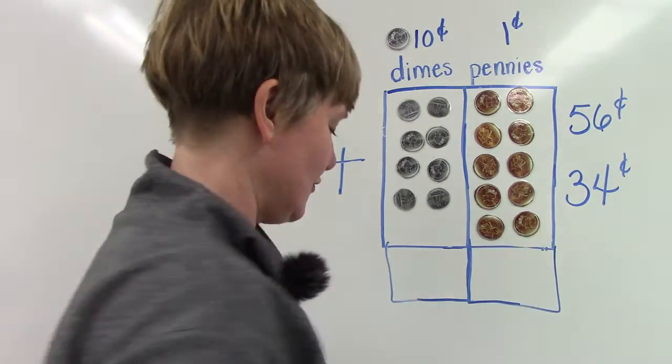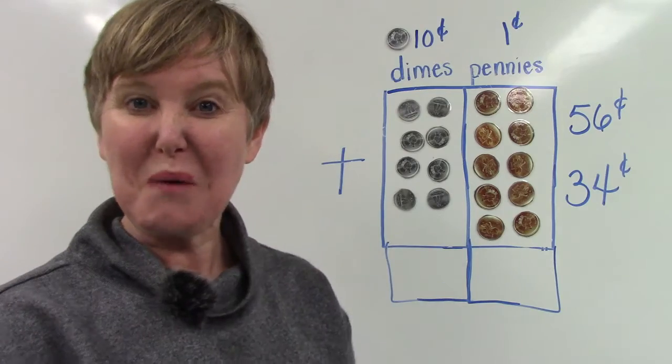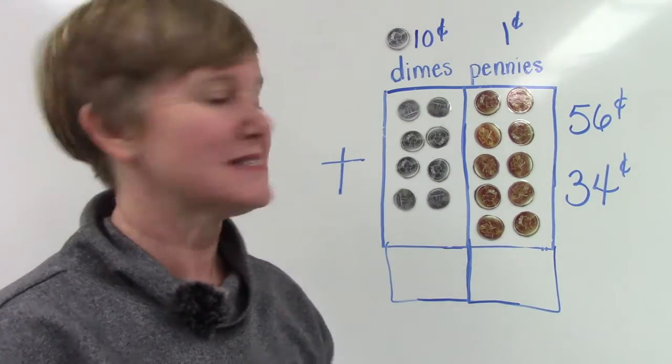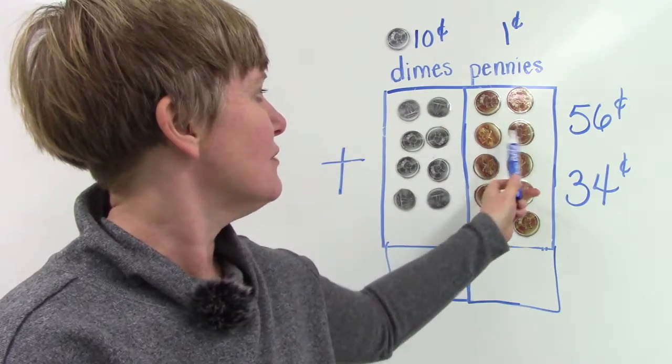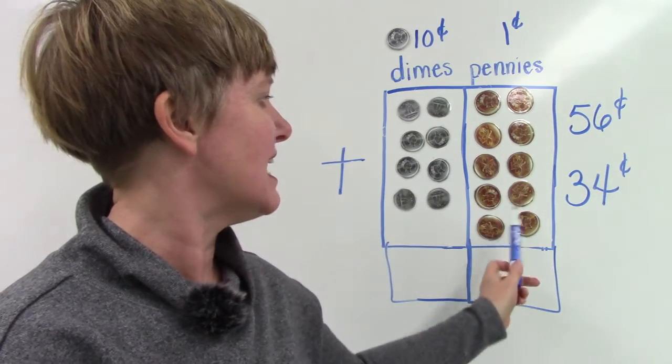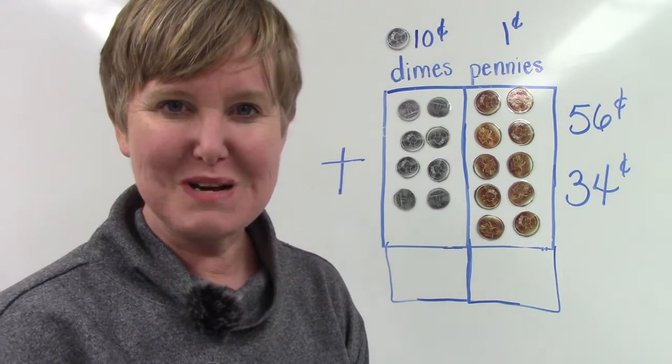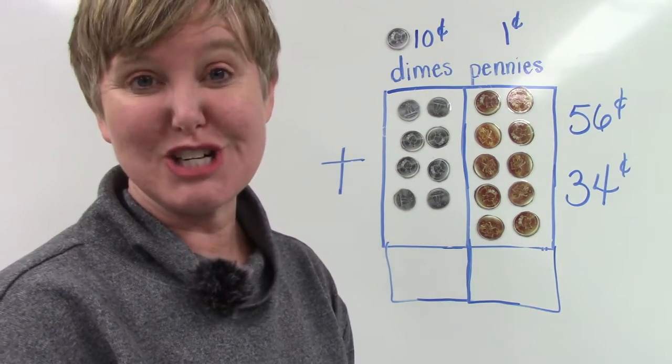And now we're going to add 34: 10, 20, 30, 31, 32, 33, and 34. We're going to start off by adding all of the pennies in our ones place: 51, 52, 53, 54, 56, 7, 8, 9, 10.